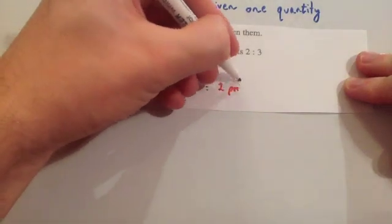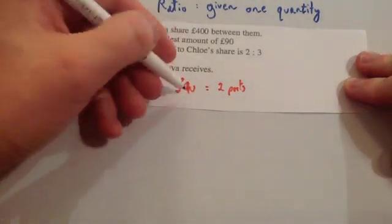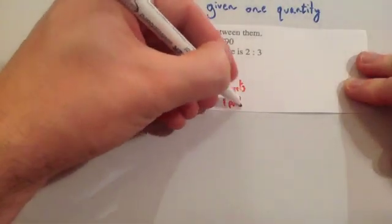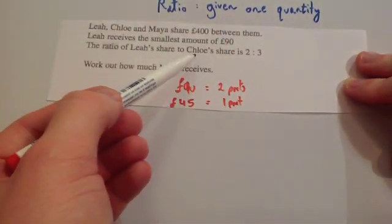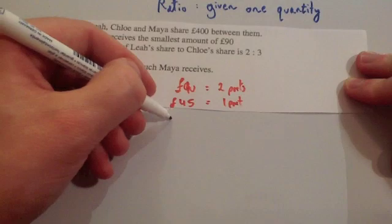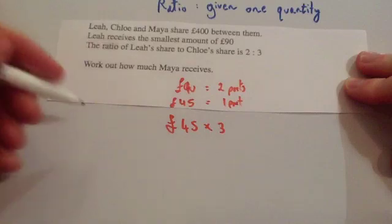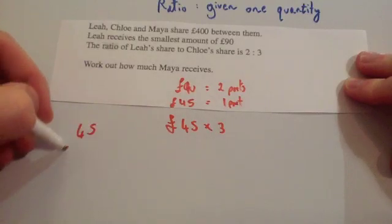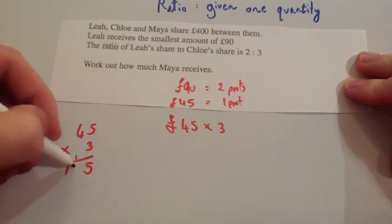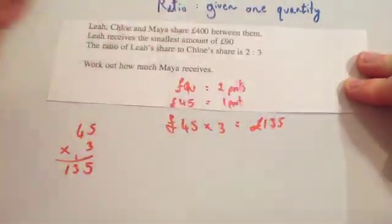£90 is two parts. Always find one part first: halving gives £45 equals one part. Chloe is the three-part in the ratio, so multiply by three: 45 times three — three times five is 15, carry the one, three times four is 12, add one is 13 — so Chloe gets £135.